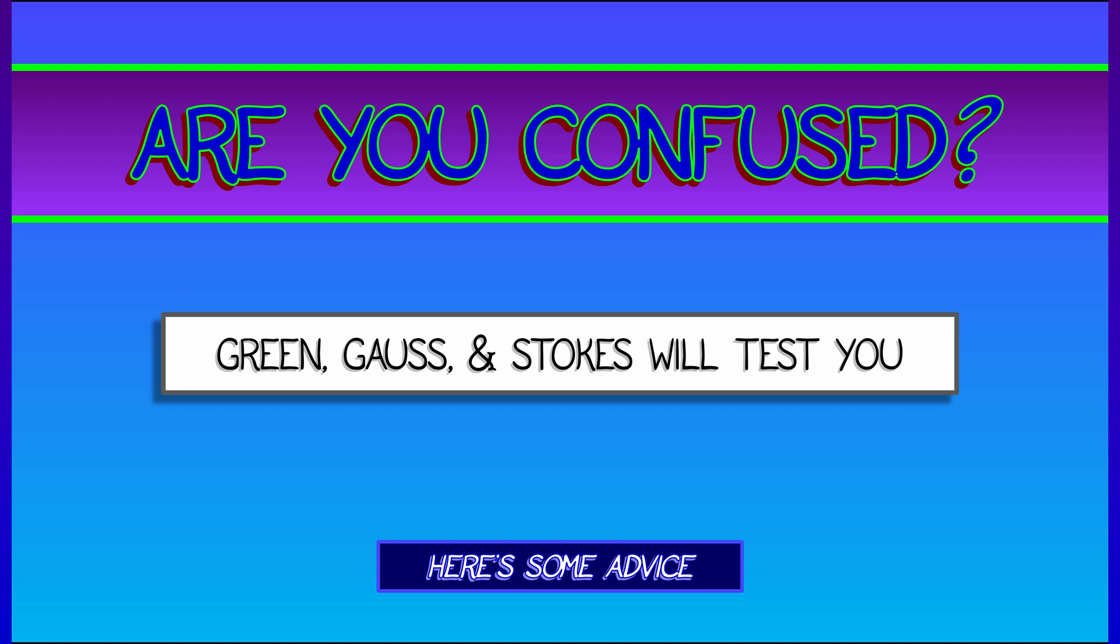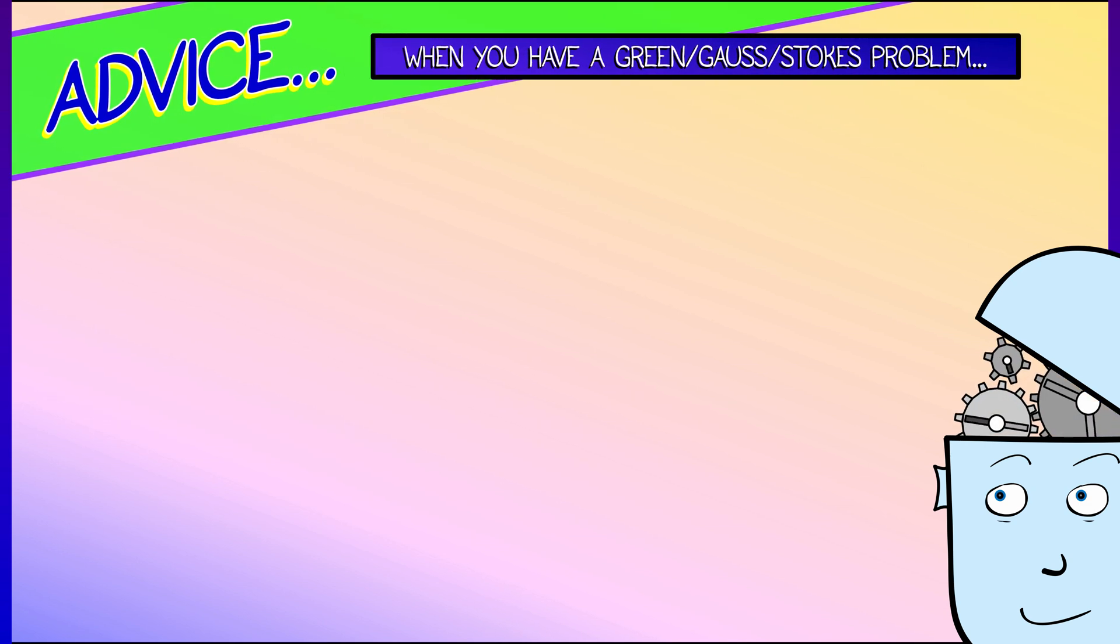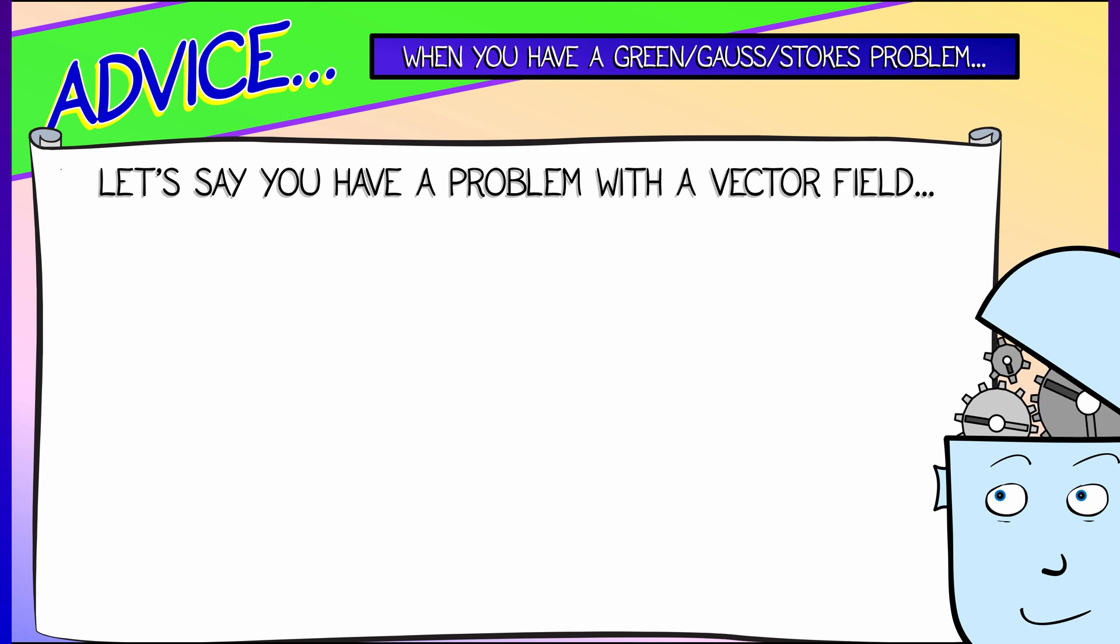I will test you. Here's some advice in terms of how to deal with this. This is general advice. If you've got some problem where you suspect it's a Green or Gauss or Stokes or something like that, say a problem with a vector field, what do you do?